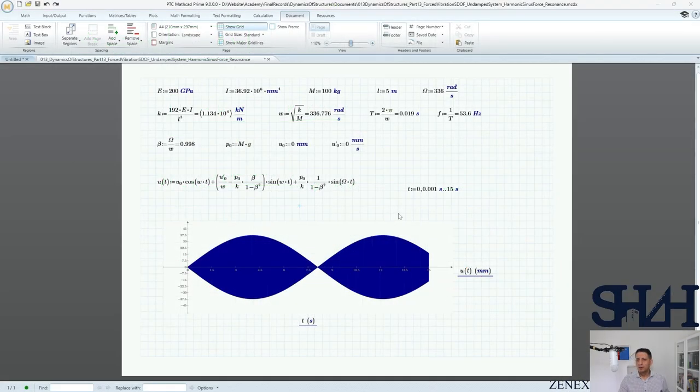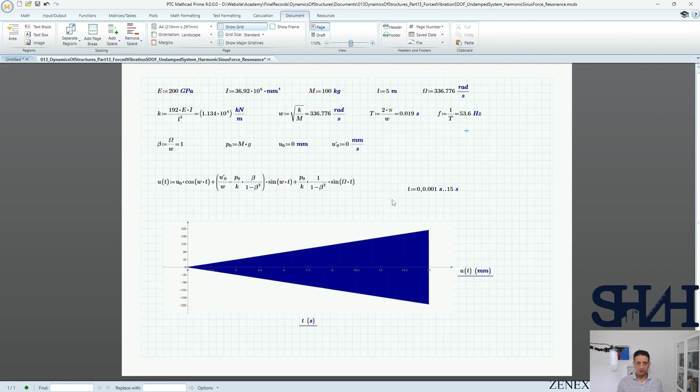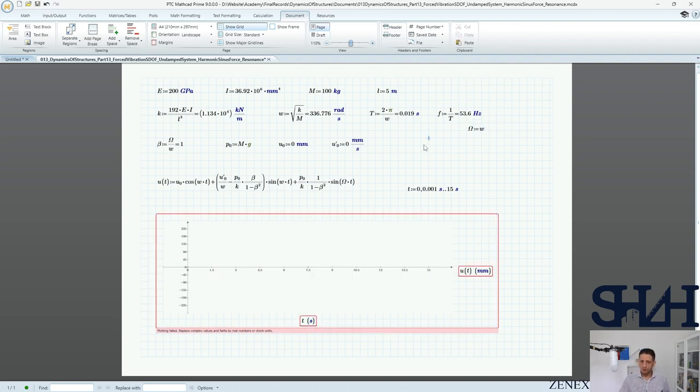Now if we change the value of harmonic force frequency to very close to 336.776, still you can see that we have the results. However, if I change this value in a way that it's exactly the same, because this is not absolutely the same, if I just change this value to the omega then you see that there is no solution for that. As long as this beta is going to be pure one, then one minus beta squared will be zero and this equation will be completely undefined.